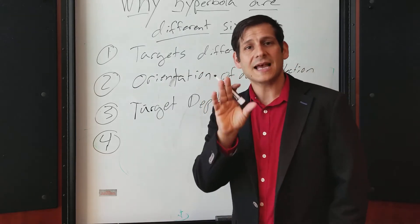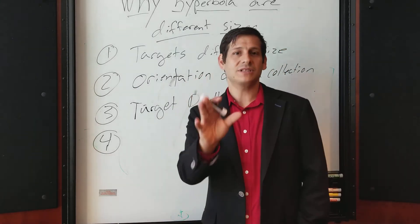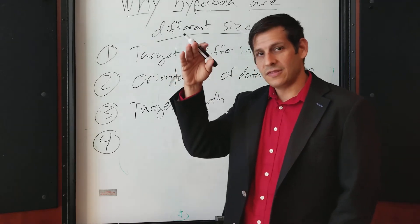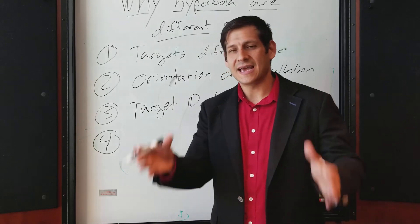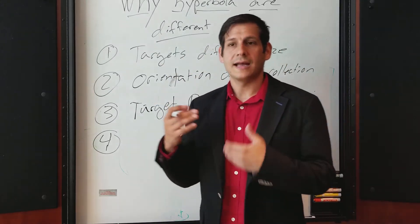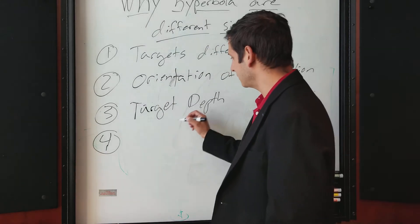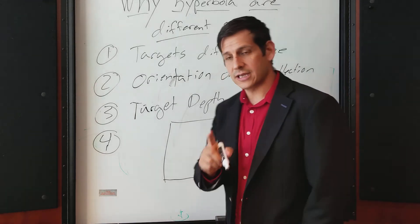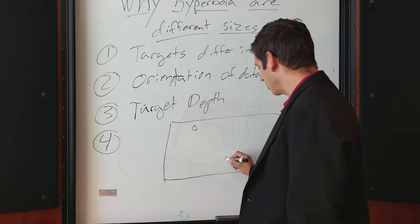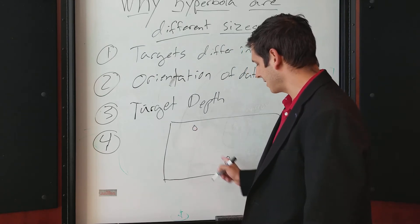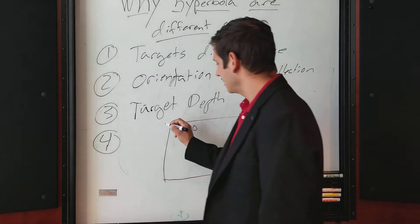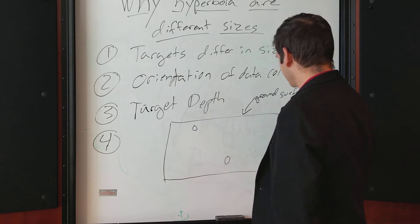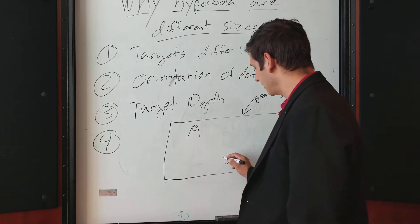The same exact size target in the same exact material but at different depths will have different responses. The hyperbola will be larger when deeper, and smaller when more shallow. So if you have a profile with the same exact size target at two different depths — one shallow and one deep — this one here will produce a smaller hyperbola than the deeper one.